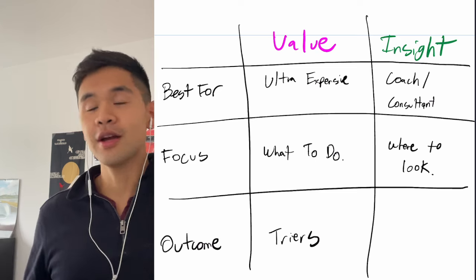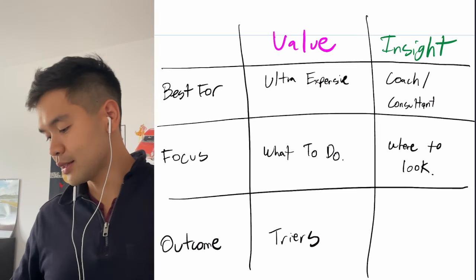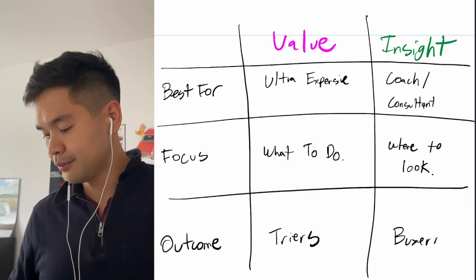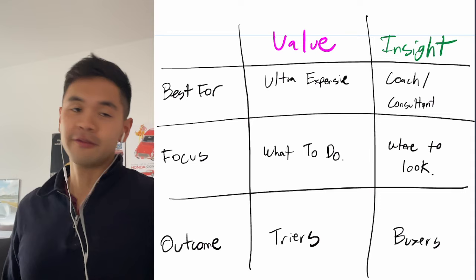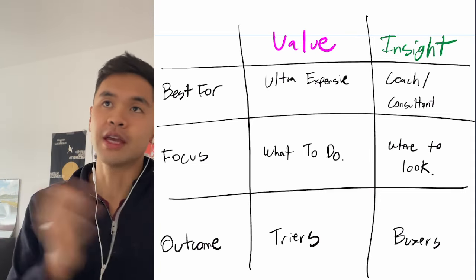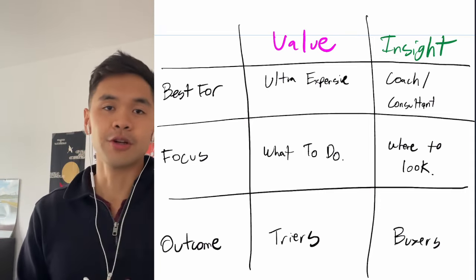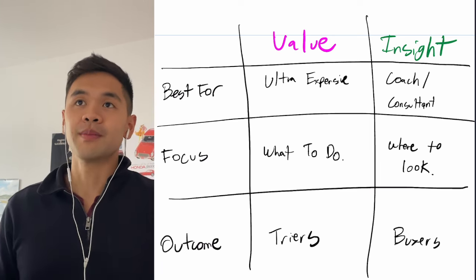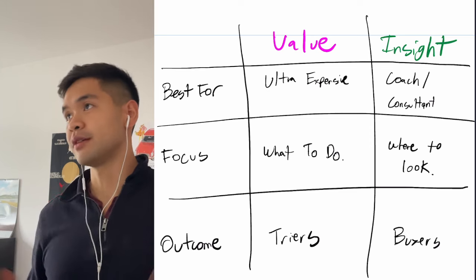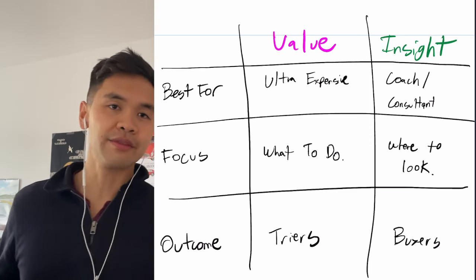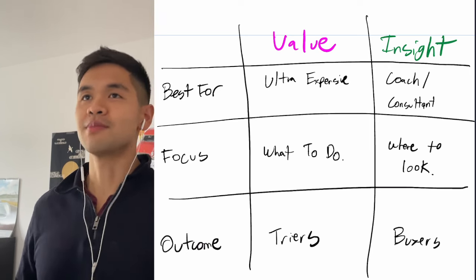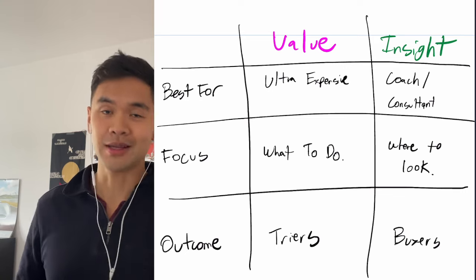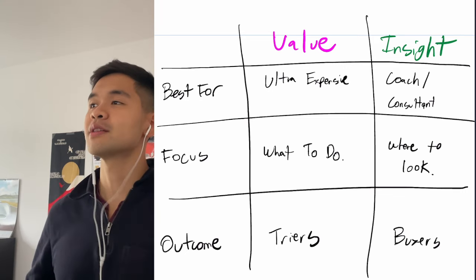So while value attracts triers, insight attracts buyers. And it was the main difference between having an audience of fish and having an audience of whales. Fish are people who cannot and will not pay for your stuff. Whales are people who can and do pay for your stuff. And that's kind of the difference. Now, I'm not saying everybody on X is a fish. I'm just saying the concentration of whales is much, much larger, 15 times larger on my Instagram because I built it the right way.